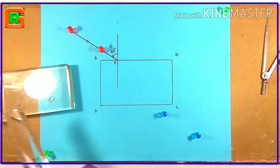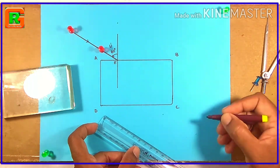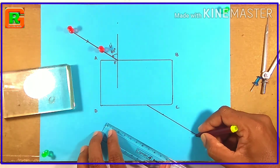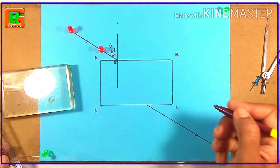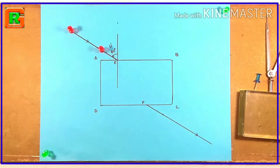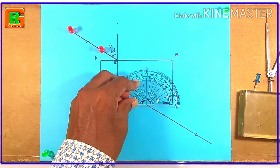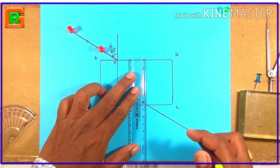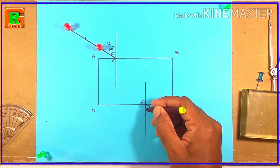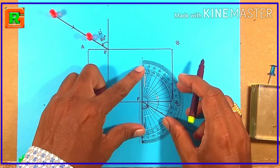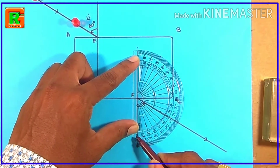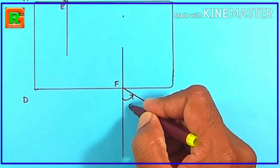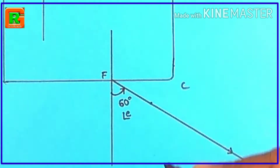Remove the glass slab. Take out the two pins and mark the dots. Draw a straight line joining these dots up to edge CD of the rectangle — this line represents the emergent ray of light. Name the intersection point F. Draw a perpendicular line on CD at F with the help of a protractor. The angle between the emergent ray and the normal is called the angle of emergence. Measuring it gives 60 degrees, so angle E equals 60 degrees.